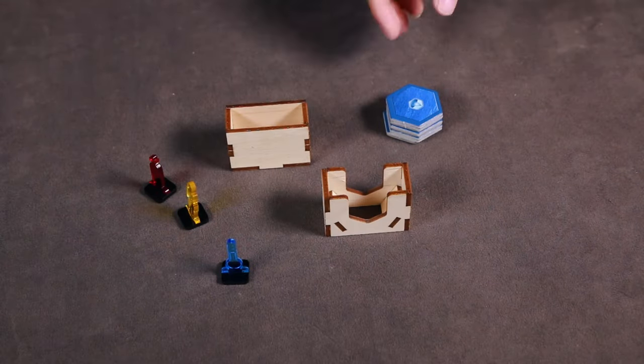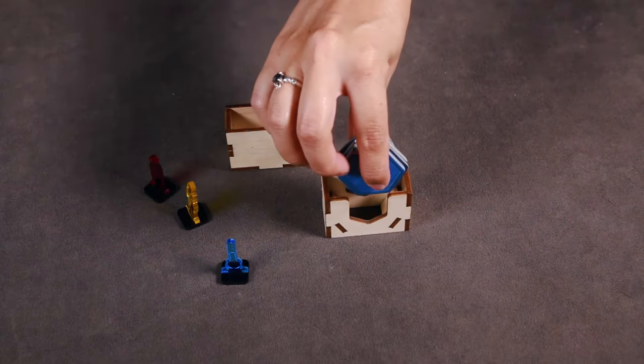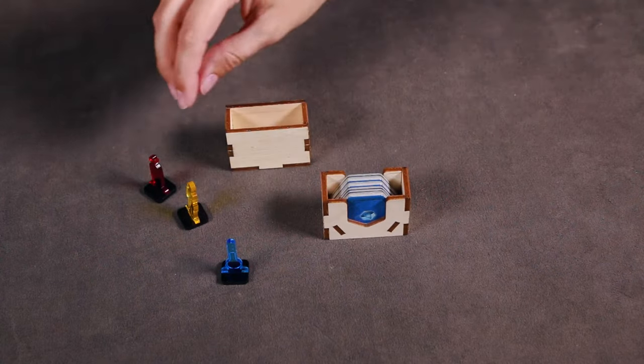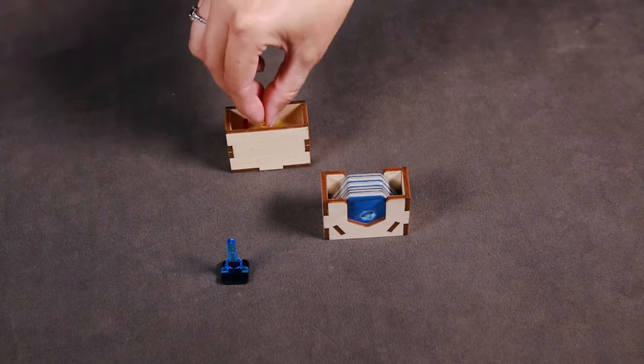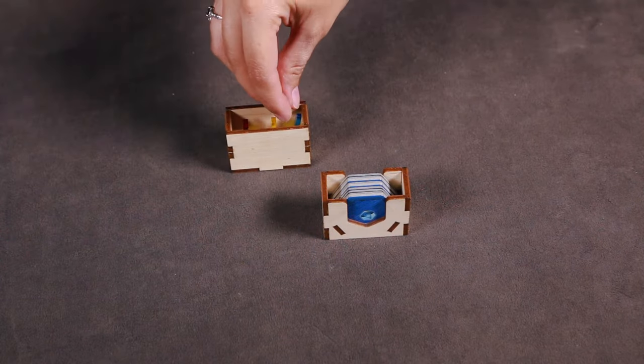The small tile box is used to store the ocean tiles, while the small token box is used to store the custom acrylic generation, temperature, and oxygen markers.